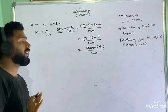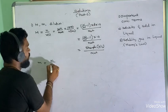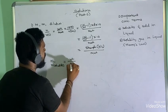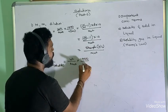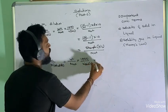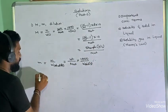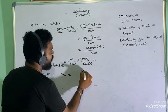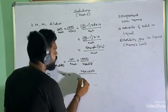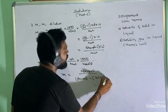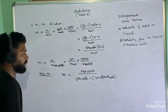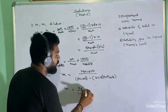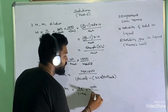For molality, we use number of moles divided by weight of solvent in kg, or weight divided by molecular weight, multiplied by 1000 divided by weight of solvent in grams. For the molarity–molality relation: molality equals molarity multiplied by 1000, divided by (density × 1000 minus molarity × molecular weight of solute). Similarly, for the molality and mole fraction relation: molality equals χ_B divided by (1 minus χ_B), multiplied by 1000 divided by molecular weight of solvent.